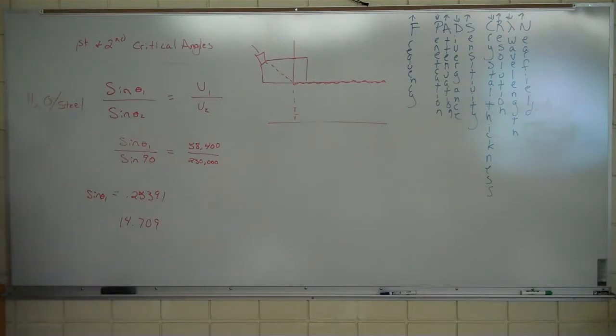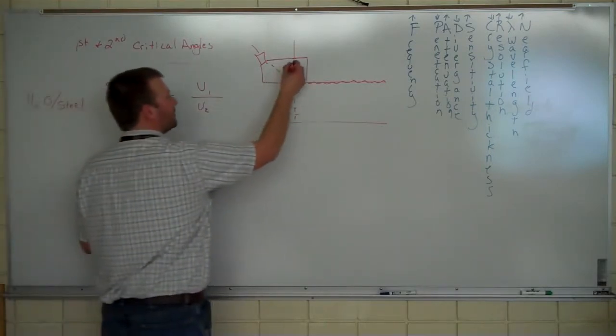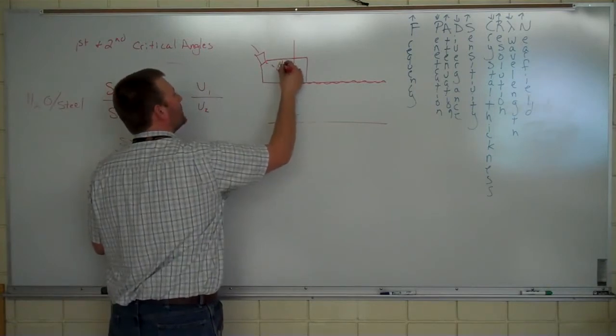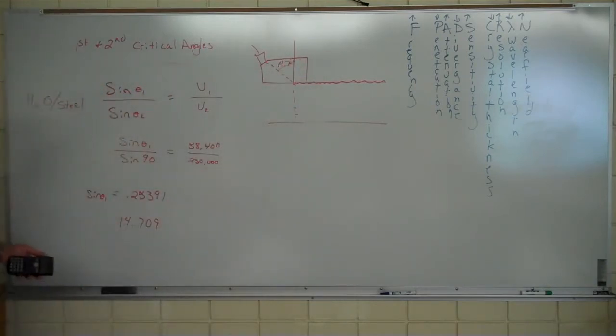That's your first critical angle. That's the first critical angle, meaning this degree here, 14.709, roughly 15 degrees. Okay? Roughly 15. That's where the longitudinal wave is refracted out, or at least 90 degrees, right? Good with that, Nick?